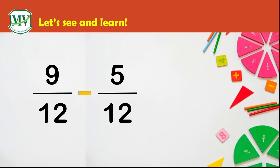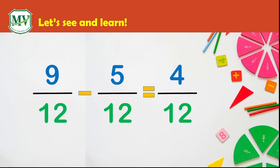To subtract 9 twelfths minus 5 twelfths, we leave the common denominator. In this case, it's number 12. And we subtract the numerators: 9 minus 5 equals 4. This result, number 4, will be the numerator. The result is 4 twelfths.